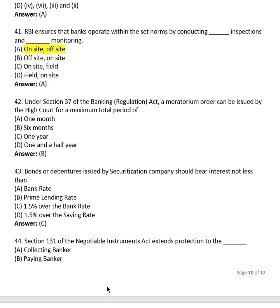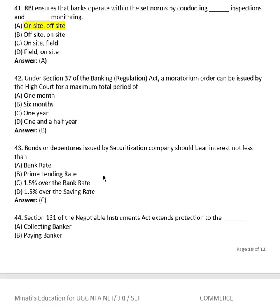Question 40: Under Section 37 of the Banking Regulation Act, a moratorium order can be issued by the High Court for a maximum total period of: one month, six months, one year, or one and a half years? The right answer is (B), six months.